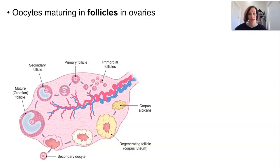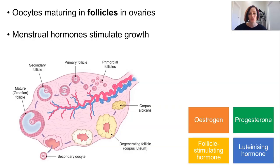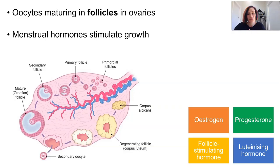Each primary oocyte is associated with a follicle in the ovaries, where it will develop individually, and as the follicles mature so will the primary oocyte. Once puberty kicks in, the first menstrual cycle begins, and hormones like estrogen, progesterone, follicle-stimulating hormone, and luteinizing hormone stimulate follicle growth. At the start of the menstrual cycle, hormones stimulate about 10 to 20 follicles to develop.